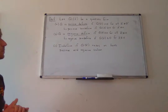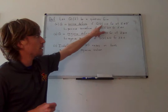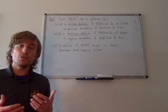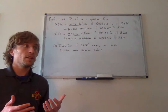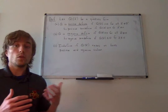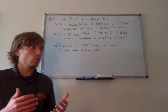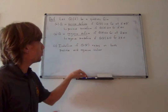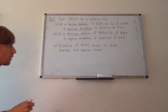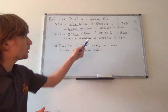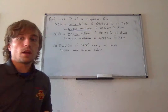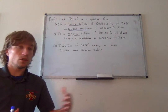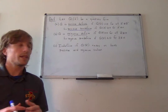If we have a quadratic form Q of X, we call Q positive definite if Q of X is strictly greater than zero for all non-zero vectors X. So the function never takes on zero or a negative number. As an analog, we say that a quadratic form is positive semi-definite if we allow the function to take on the value zero, but not any negative values. So positive definite means strictly greater than zero; positive semi-definite means greater than or equal to zero for all non-zero X.